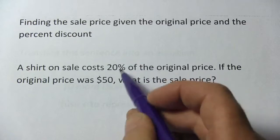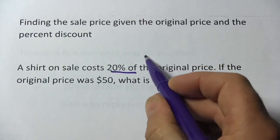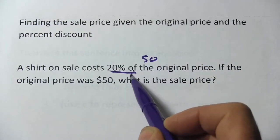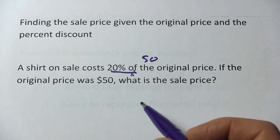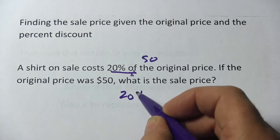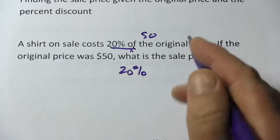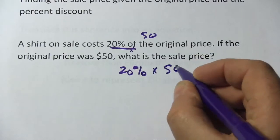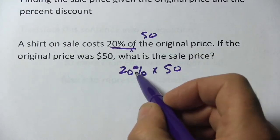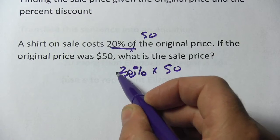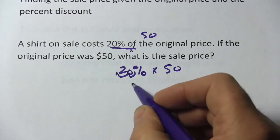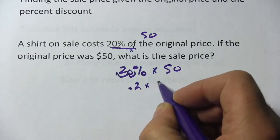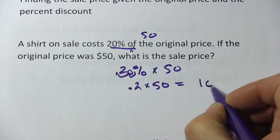Well the original price is 50, so this is 20% of 50. Of in these situations almost always means multiply, so this is 20% times the original price, which is 50. Of course, if you're going to multiply with percents, you have to convert them to decimals. So I'm going to move this two places to the left. We get .2 times 50. That equals $10.